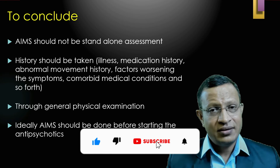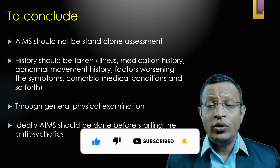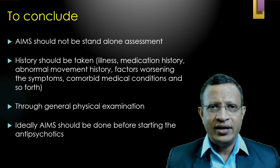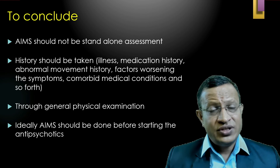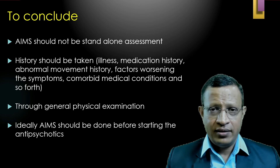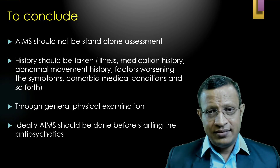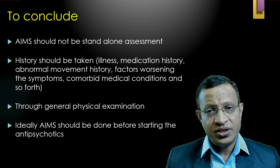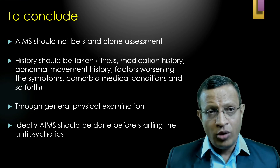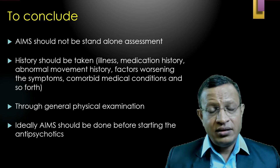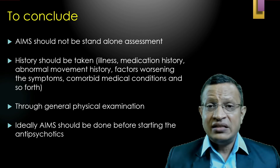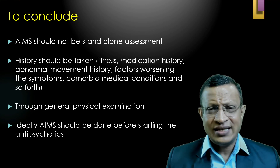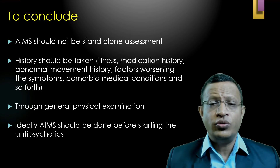To conclude: AIMS should not be used as a standalone assessment scale. It is used for screening and to roughly assess severity. Before using the AIMS scale, you should do thorough history taking — look for the illness, get a good medication history, determine whether abnormal movements existed before starting medication, identify factors that worsen these movements, symptoms worsening after stopping medication, and any comorbid medical conditions. A thorough history and general physical examination must be done before administering the AIMS scale.